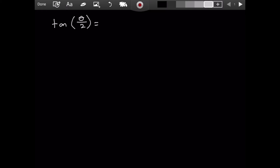I'm going to give you the formulas and then we will prove them. The first formula is sine of theta divided by 1 plus cosine of theta. The other formula will be 1 minus cosine of theta divided by sine of theta. By the end of this video, we want to show that these two are correct representations of tangent of theta divided by 2.